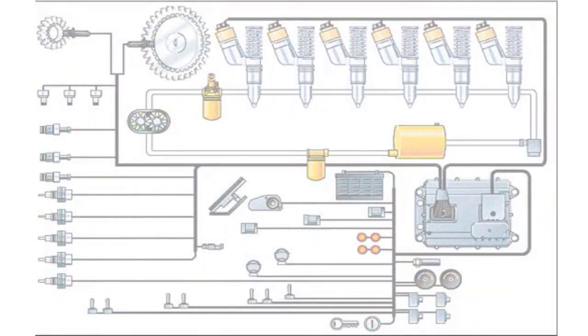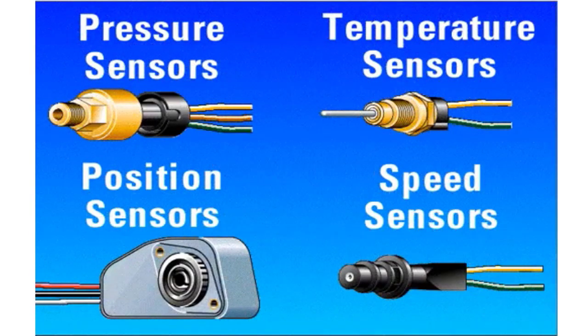The electronic systems on the engine may seem complicated. However, once you understand how these basic types of sensors work, the operation of individual circuits becomes much easier to understand.